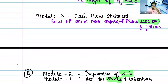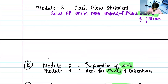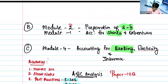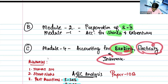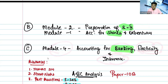Then B category will be module 2 and module 1 — that is preparation of Schedule 3 and accounting for shares and debentures — and module 4. Your C category, which is the last preference, will be banking, electricity company, and insurance for Paper 10A.